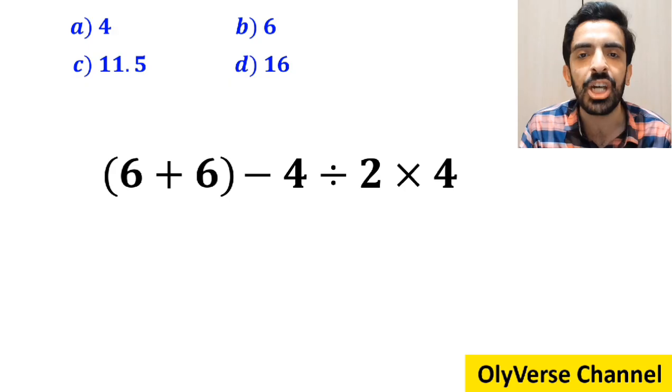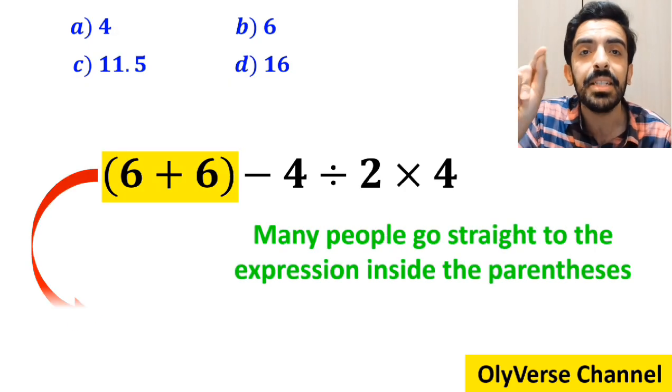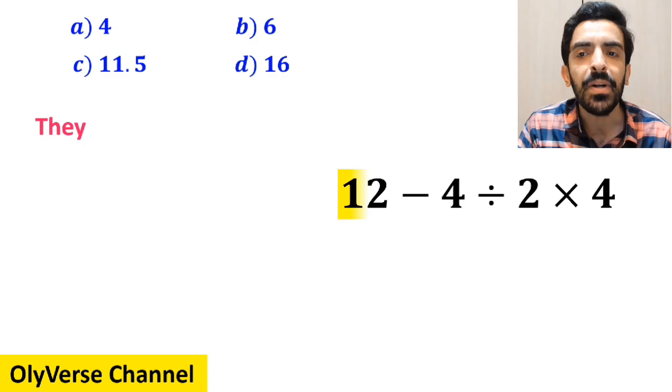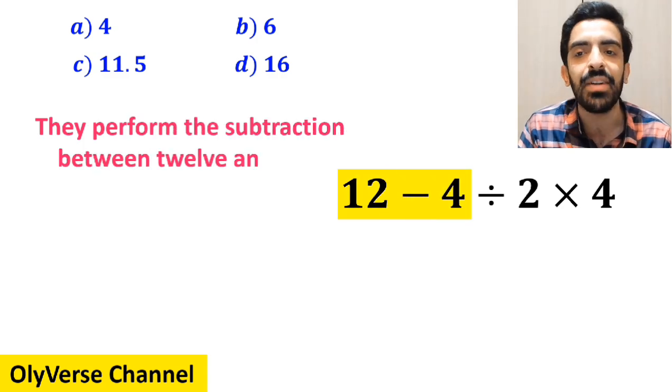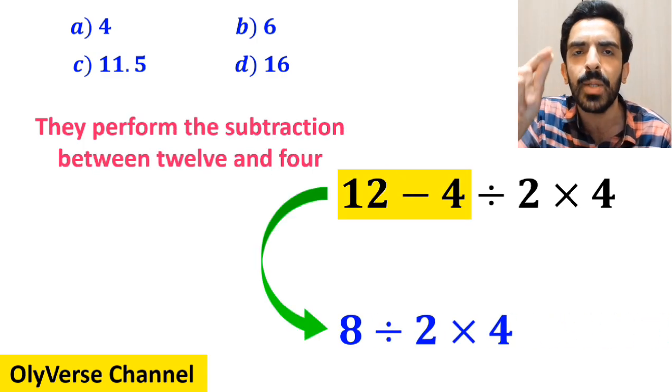In the first step of solving this question, many people go straight to the expression inside the parenthesis and simplify the whole expression to 12 minus 4 divided by 2 multiplied by 4. In the next step, they perform the subtraction between 12 and 4, and simplify this expression to 8 divided by 2 multiplied by 4.